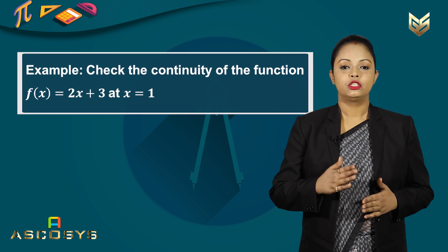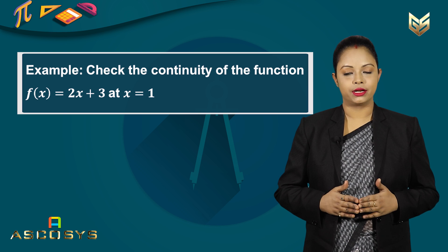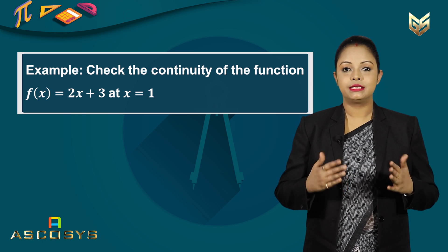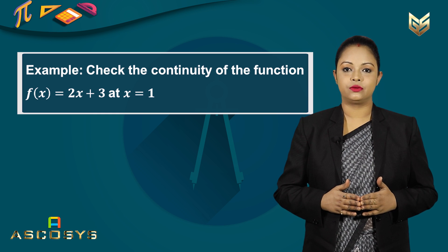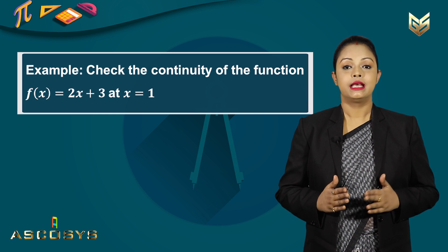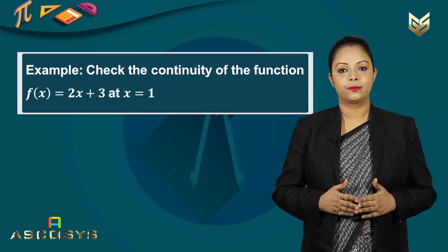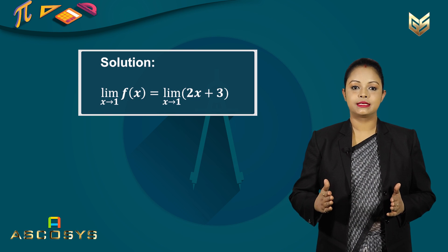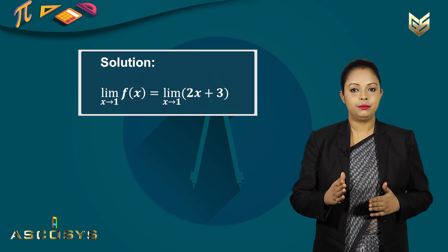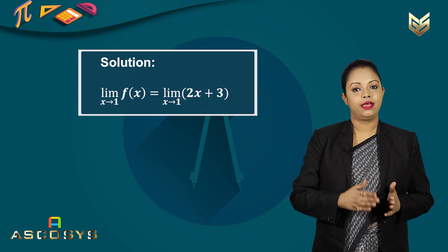Now let us study some numericals. Check the continuity of the function f(x) equal to 2x plus 3 at x equal to 1. You have to recall the definition of continuous functions because we cannot always draw the graph of a function. When you recall the mathematical definition, it is: the limit of the function at a particular point is equal to the value of the function at that particular point. So let us begin our solution. We have the limit of f(x) as x goes to 1, which will equal the limit of 2x plus 3 as x goes to 1.